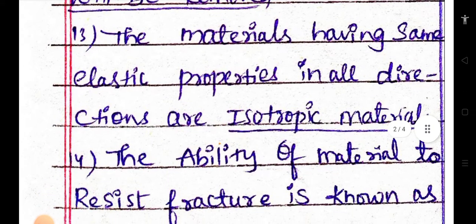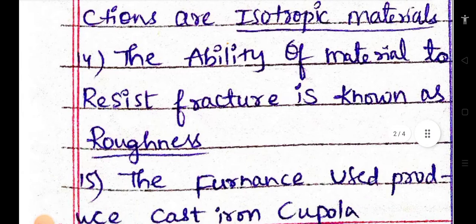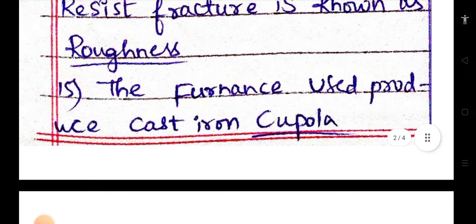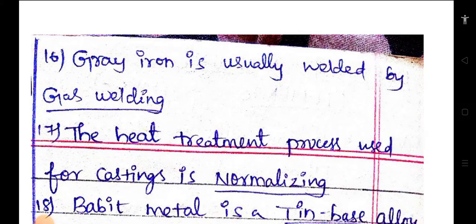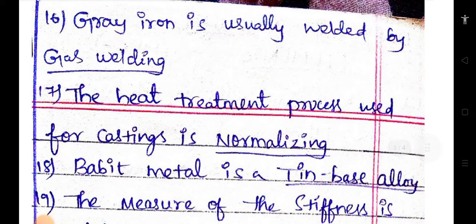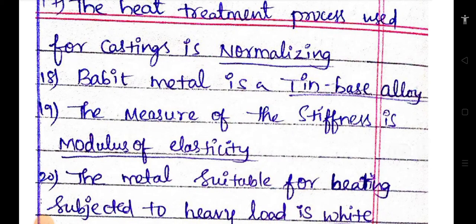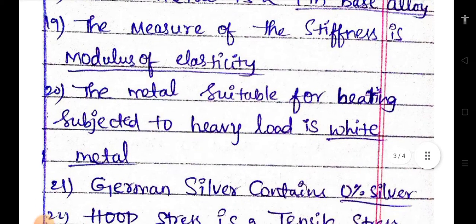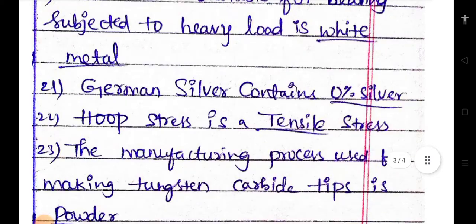When cobalt added to the steel, magnetic properties will be removed. The materials having same elastic properties in all directions are isotropic materials. The ability of a material to resist a fracture is known as toughness. The furnace used to produce cast iron is cupola. Gray iron is usually welded by gas welding. The heat treatment process used for castings is normalizing. Babbit metal is a tin base alloy.